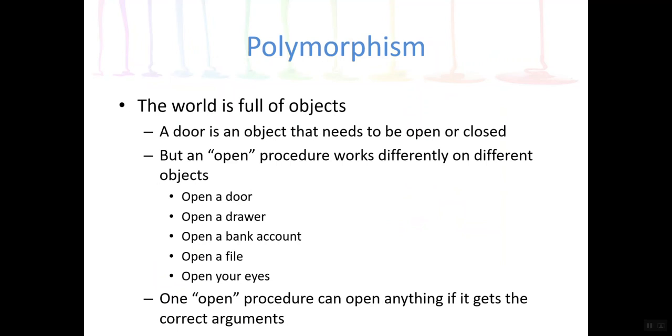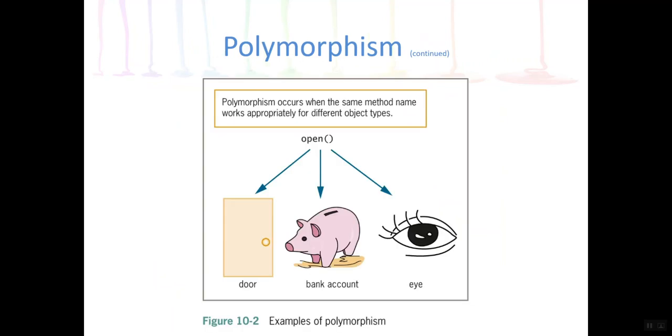But just understand that it works differently on different objects. So we may have methods that have the same name, but one method is defined in, you know, class dog, and another method is defined in class cat, and that method may have a different set of statements in each class. So that's all they're getting at here with polymorphism. So again, here's a picture. Polymorphism occurs when the same method name works appropriately for different types of objects.